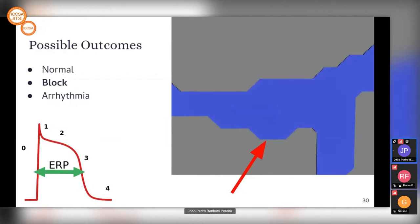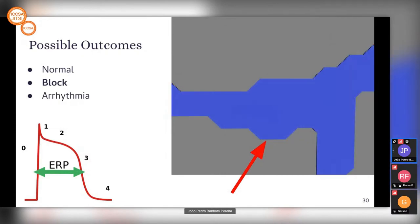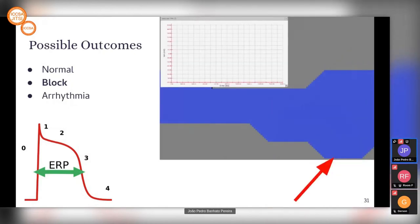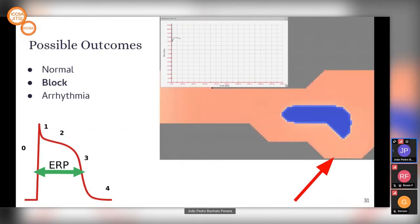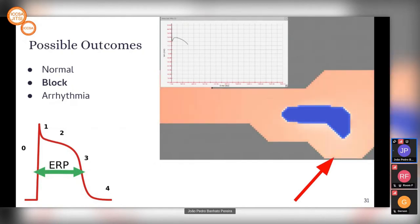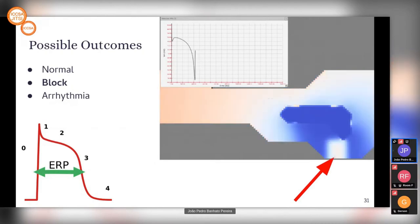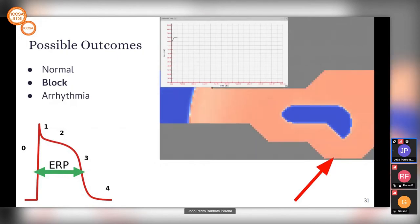If it's a block, that means the stimulus was applied to a region still in the refractory period, so it's not able to stimulate the cells in its vicinity. As you can see in the GIF, the second stimulus is not able to propagate properly. There's a spike in the refractory period of the cell. That red arrow shows where we're analyzing a cell, and the graph shows that the stimulus was applied when the cell was still in the refractory period, so it's not able to stimulate the cells properly.